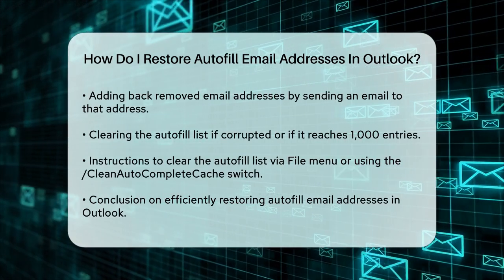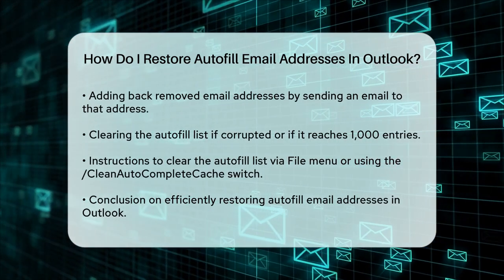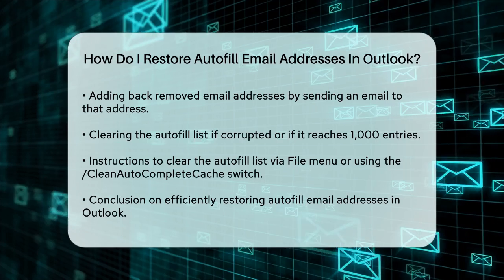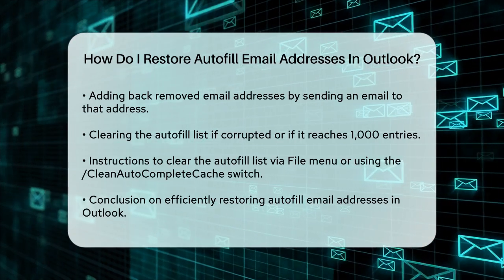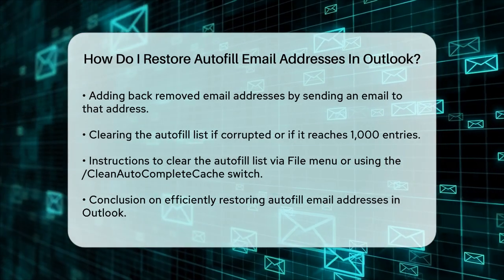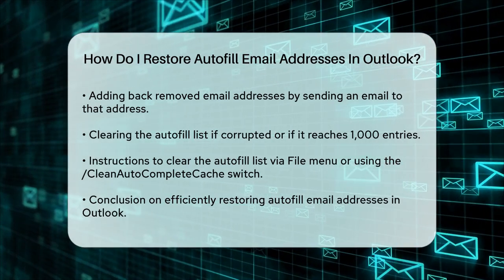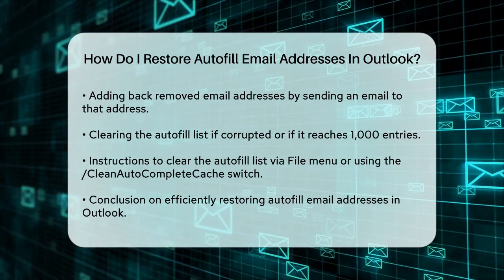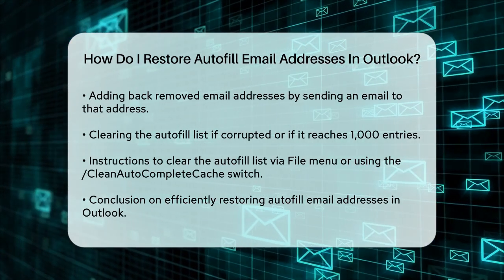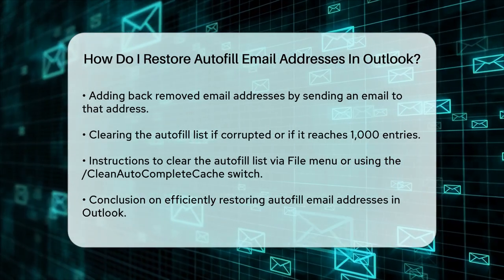In some cases, the autofill list might become corrupted or reach its limit of 1,000 entries. If this happens, you can clear the entire list by going to the File menu, selecting Options, then under Send Messages, clicking Empty Autocomplete List. Alternatively, you can start Outlook with the /cleanautocompletecache switch to clear the cache.